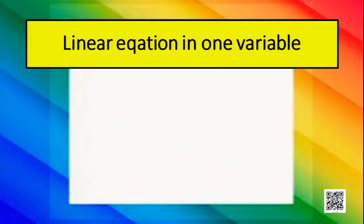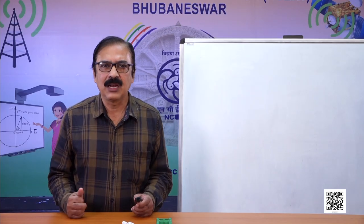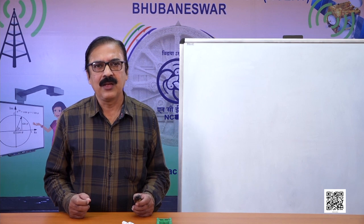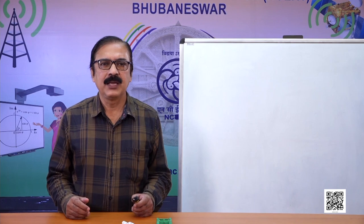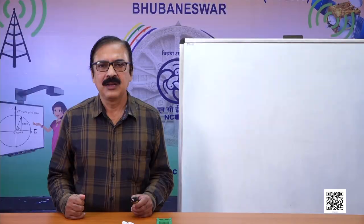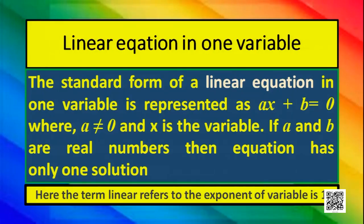Now let's see linear equation in one variable. What is a linear equation? Earlier we studied about linear polynomial — linear polynomial means the exponent of the variable is 1. The standard form of a linear equation in one variable is represented as ax plus b is equal to 0, where a is not equal to 0 and x is the variable. A and b are real numbers — they are constants here. The equation has only one solution, and the solution is x equal to minus b by a.